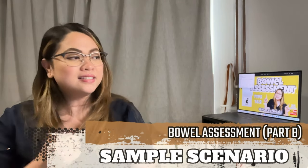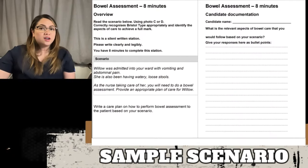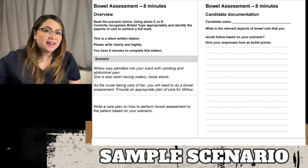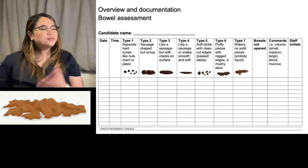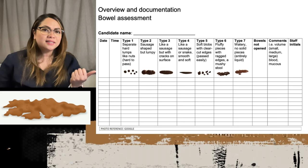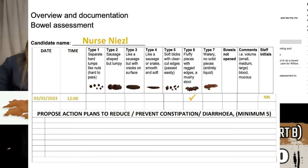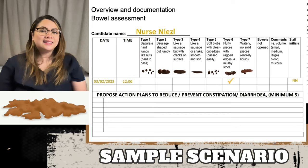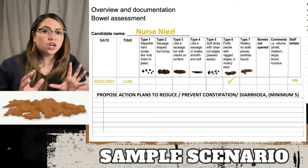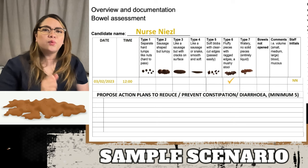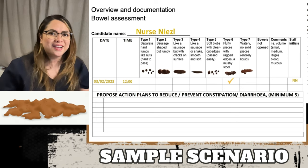Now for the most awaited part: the sample scenario. Willow was admitted to your ward with vomiting and abdominal pain. She has also been having watery or loose stools. As the nurse taking care of her, you need to do a bowel assessment and provide an appropriate plan of care for Willow. Looking at the chart and the photo, we have to identify the stool type. We put the date, the time, and identify the photo — which is type 6: fluffy, ragged on the edges, a mushy stool. We tick type 6 and put our signature.